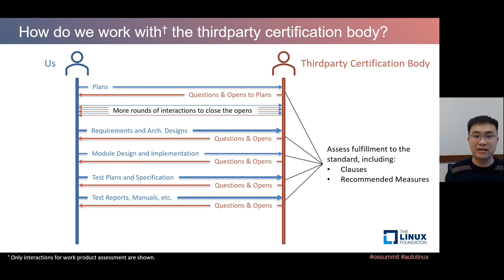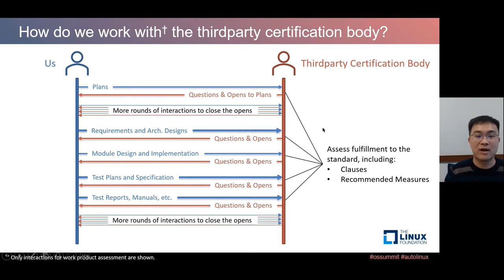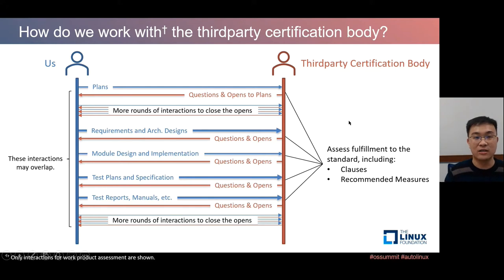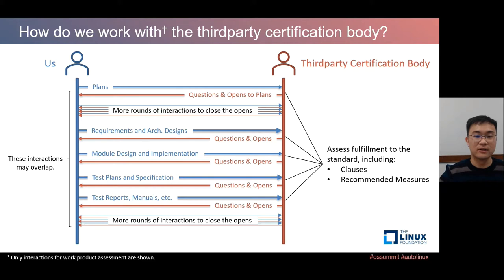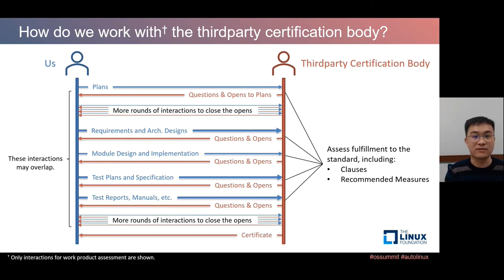The certification body assesses all work products according to standard requirements and raises questions during visits, with multiple rounds of interactions to close identified gaps. These interactions can overlap — two batches of work products may be delivered alongside responses to previous questions. Once all work products have been delivered, reviewed, and all questions and gaps clarified and closed, we receive a certificate from the certification body stating the properness of using the software in safety-critical applications.